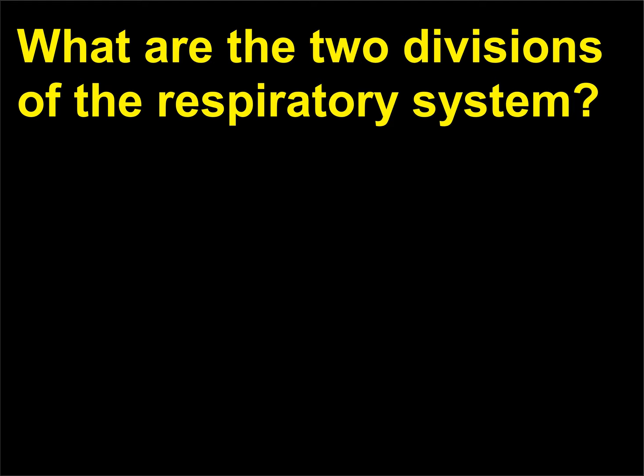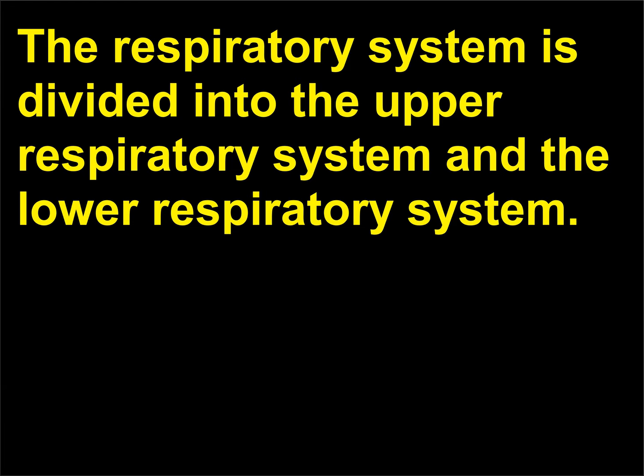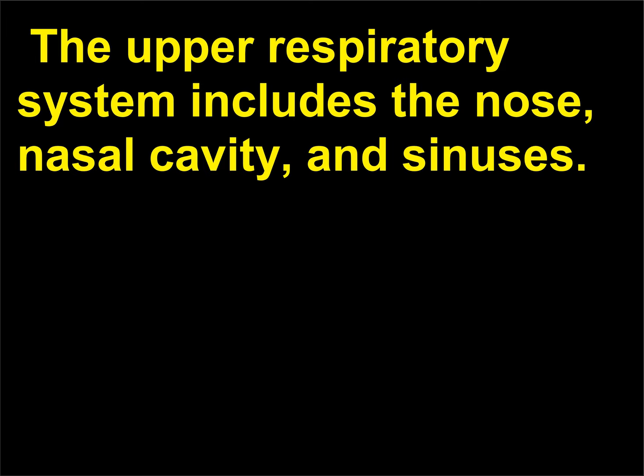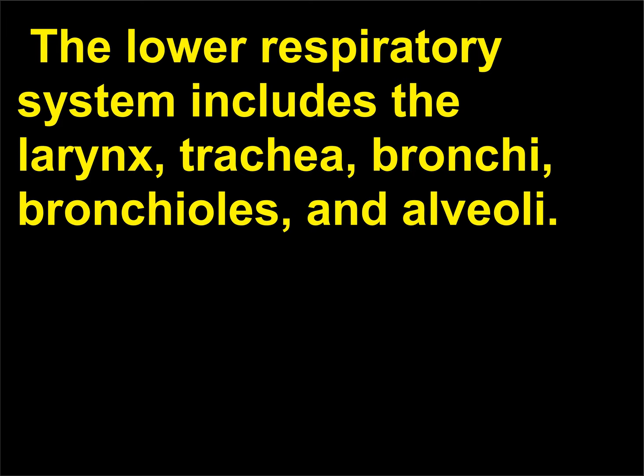What are the two divisions of the respiratory system? The respiratory system is divided into the upper respiratory system and the lower respiratory system. The upper respiratory system includes the nose, nasal cavity, and sinuses. The lower respiratory system includes the larynx, trachea, bronchi, bronchioles, and alveoli.